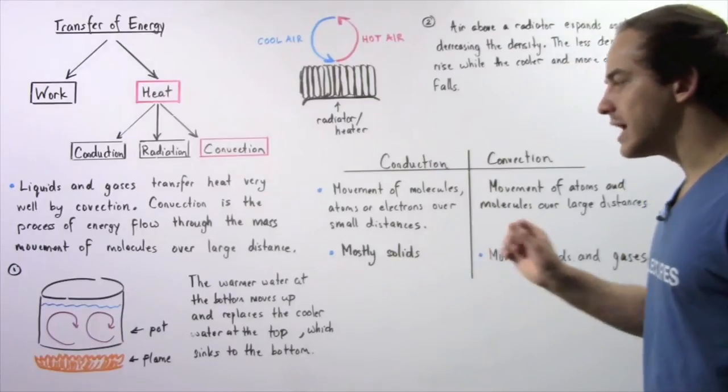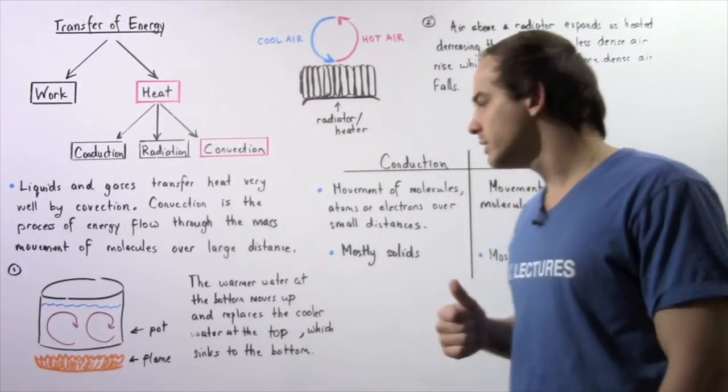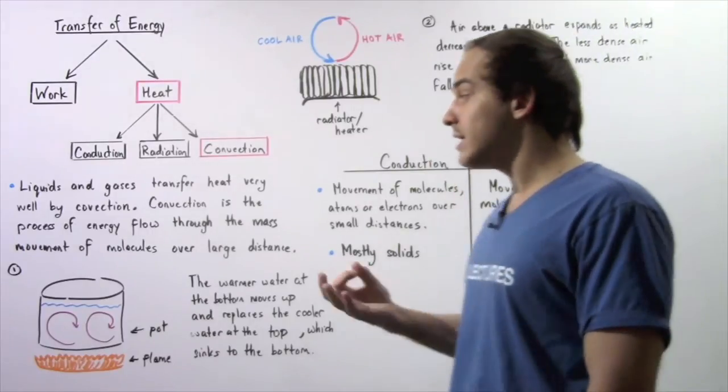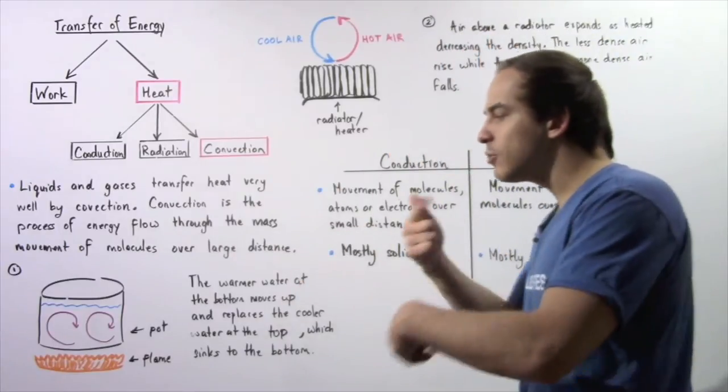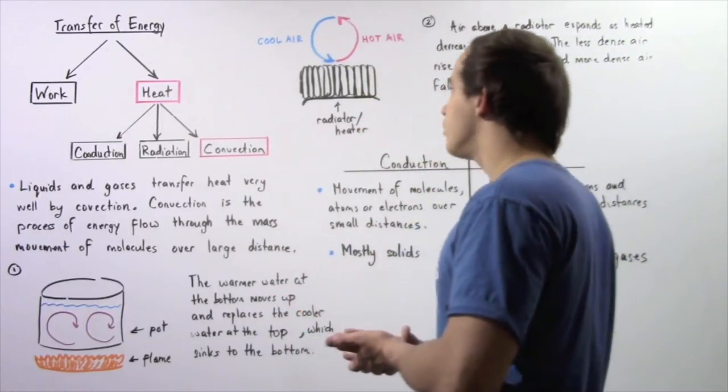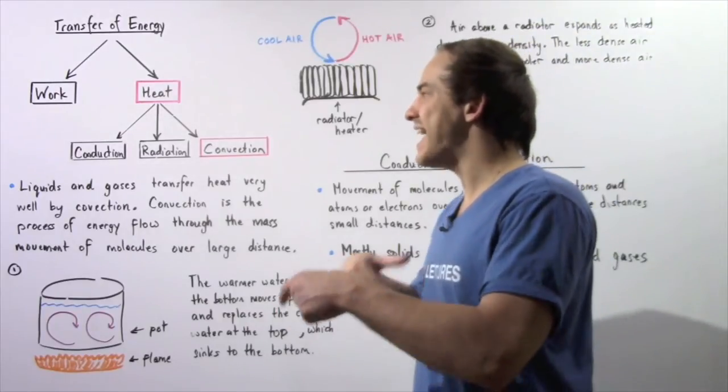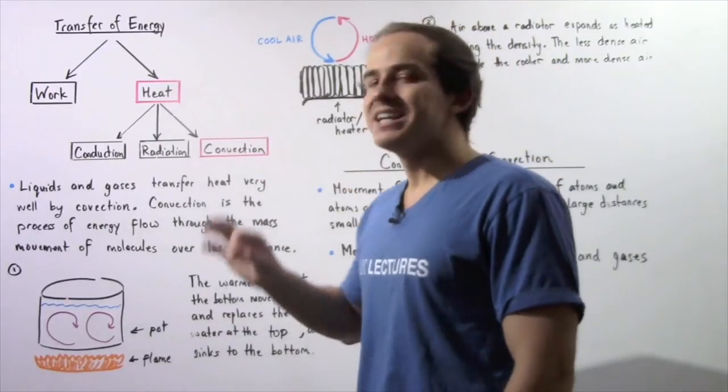The warmer water at the bottom moves up and replaces the cooler and more dense water at the top. The water at the top, because of its higher density, sinks to the bottom. This pathway continues until the water boils. This process by which there is an energy transfer as a result of heat is known as convection.